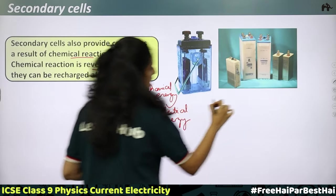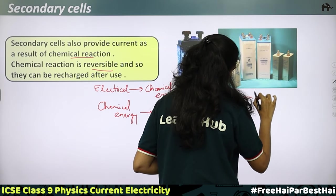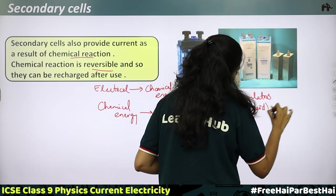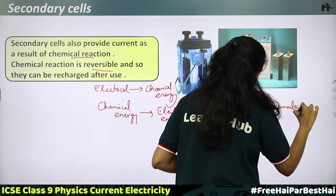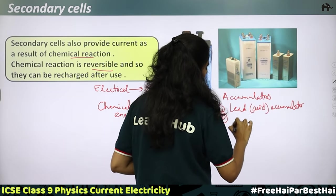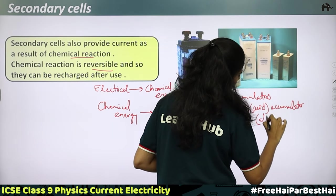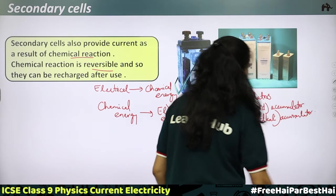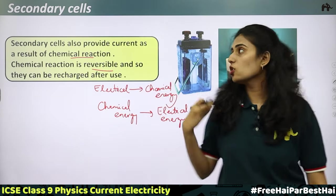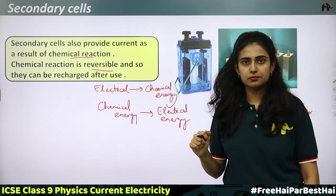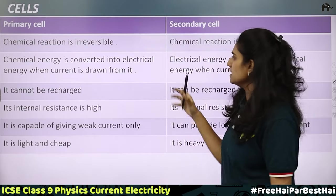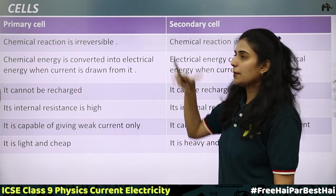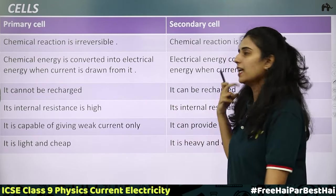Secondary cells are also called accumulators or storage cells because they can store charges. Examples include lead-acid accumulators and lithium nickel accumulators. Now let us compare primary cells and secondary cells.